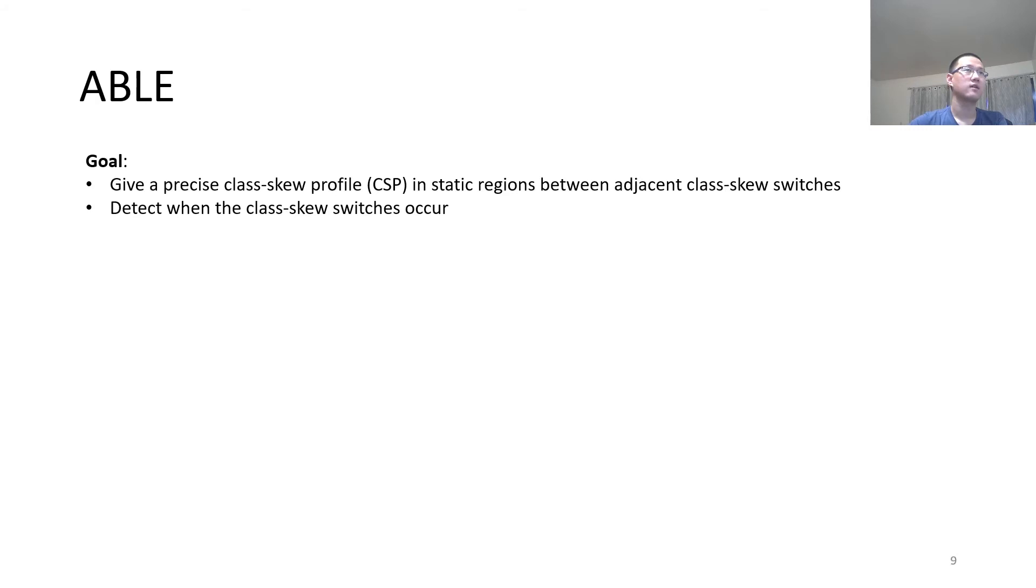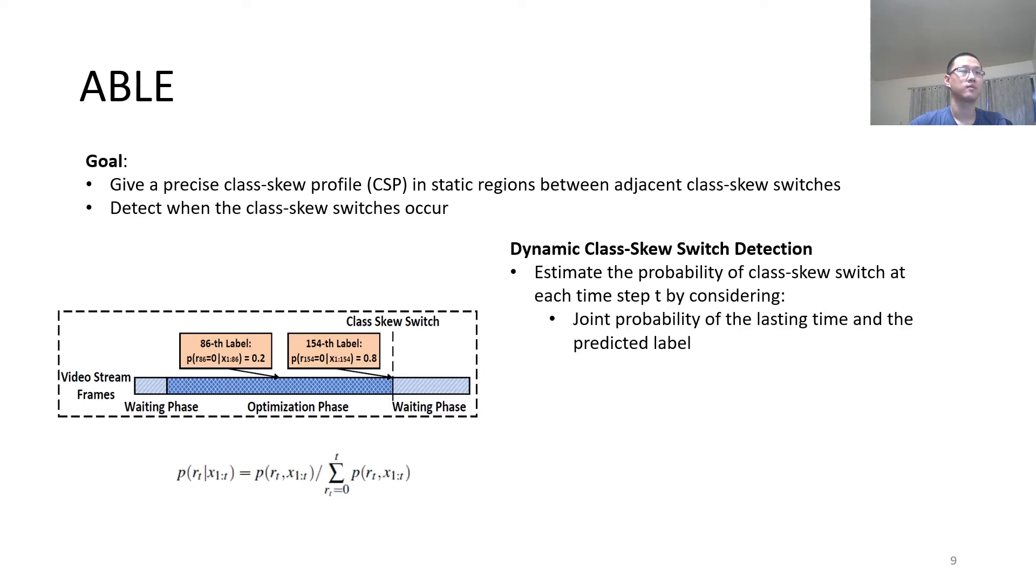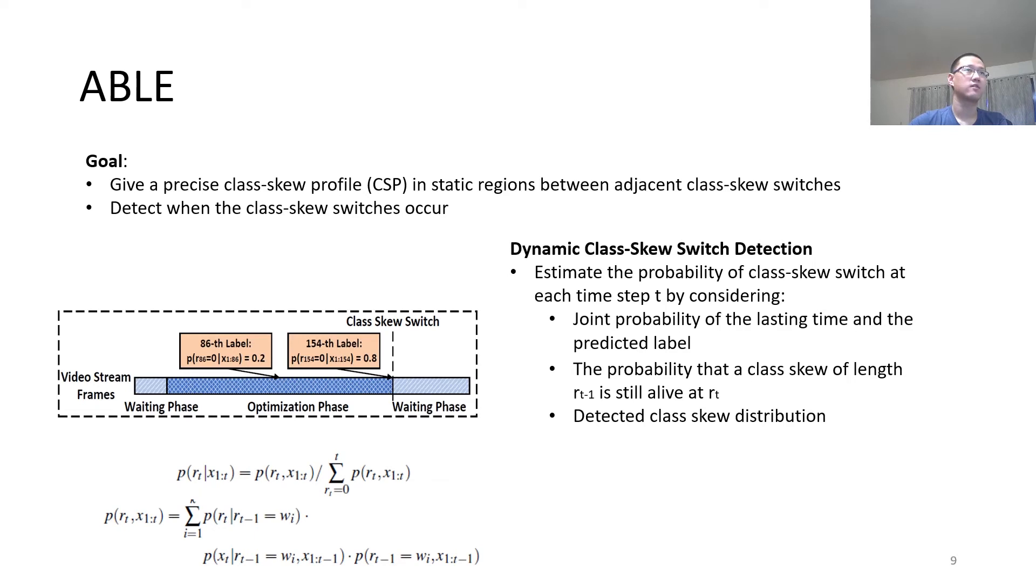The second technique in ABLE is dynamic class skew switch detection. We estimate the probability of class skew switch at each time step by considering the joint probability of the lasting time and the predicted label. We also consider the probability that a class skew at time t-1 is still alive at time t and the detected class skew distribution. Furthermore, we reduce the detection overhead by window sampling that considers a subset of time windows and reuse computation in adjacent time windows.